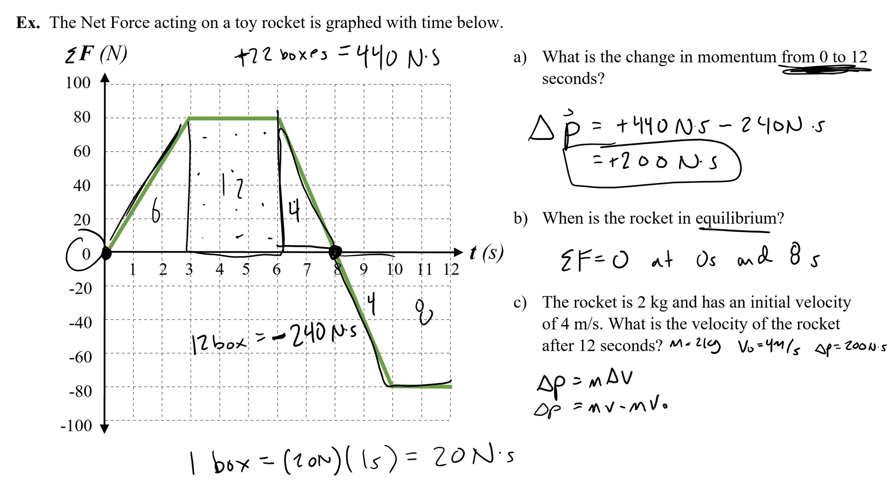So what do I do? I'm going to rearrange this equation. I would first add mv0 to both sides, so delta p plus mv0 is equal to mv. Then I'm going to divide both sides by m to get the velocity by itself, and now I can plug in my numbers. So the velocity is the change of momentum, 200 newton seconds, plus 2 kilograms times 4, so 8 meters a second, all over 2 kilograms. So 200 plus 8 is 208, divided by 2 is 104, which is incredibly fast. So this toy rocket is flying, quite literally, with a velocity of 104 meters per second after that initial 12 seconds. I maybe made this problem up with numbers that were too high. That's like almost a football field in a second.